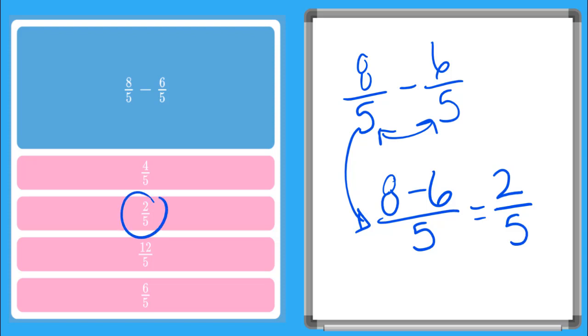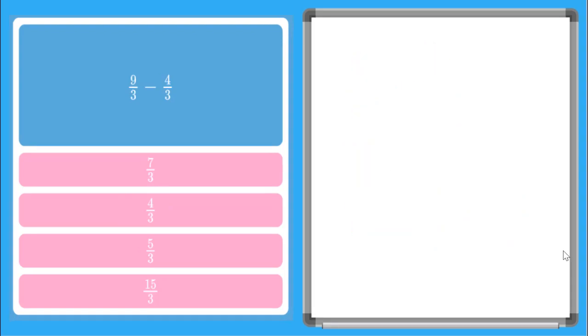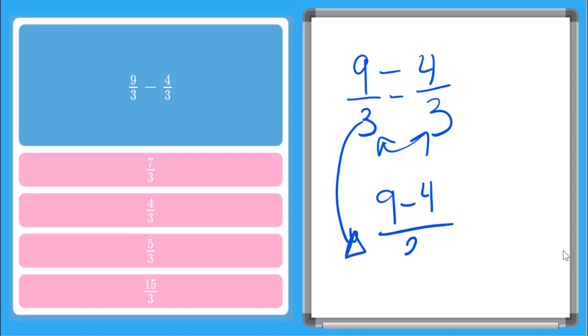All right, let's do one last one together. So this one here, I have two improper fractions: 9 over 3 minus 4 over 3. So what do I do first? Yep, I check my denominators, make sure that they are the same. And if they are, I can go ahead and subtract my numerator. So 9 minus 4. I bring that same denominator down. It doesn't change. And now I can go 9 minus 4 is 5. And I keep my denominator. 5 thirds right there.